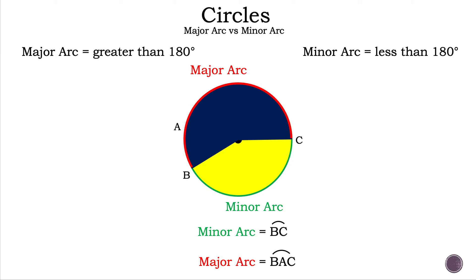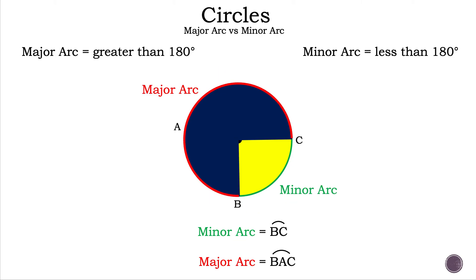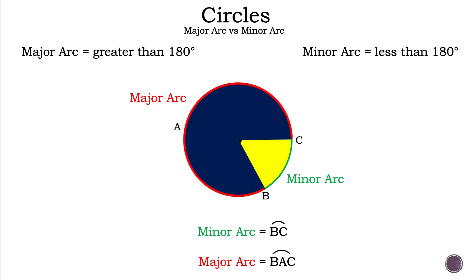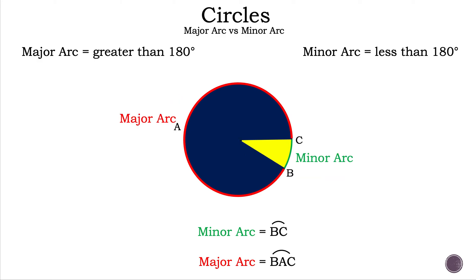Now let's increase the red arc just a bit more. The red arc is now three-quarters of a turn of a circle and the green arc is only one quarter of a turn of a circle. So the red arc is the major arc — that is arc BAC or CAB — and our minor arc is BC or CB.